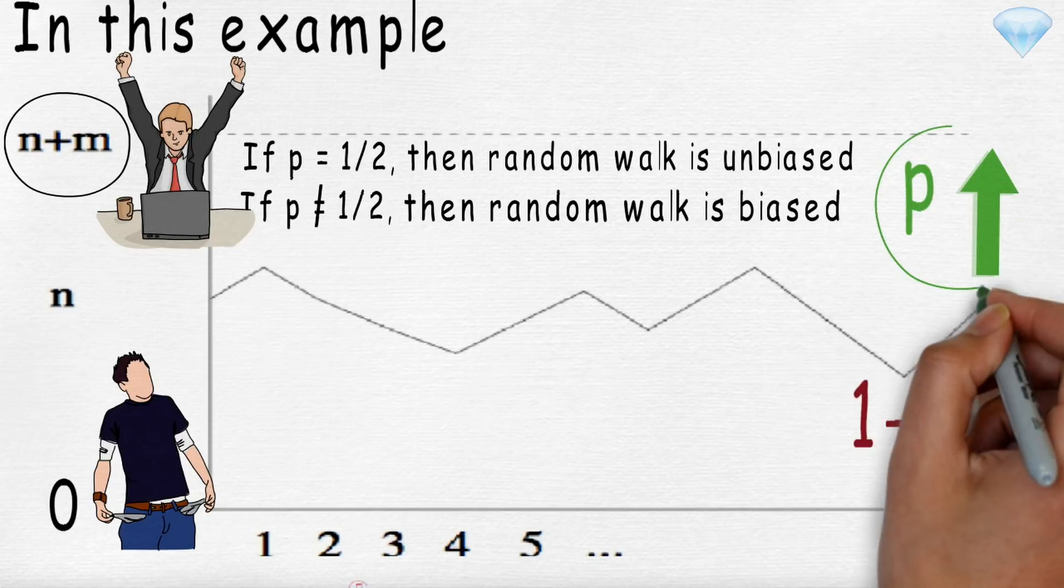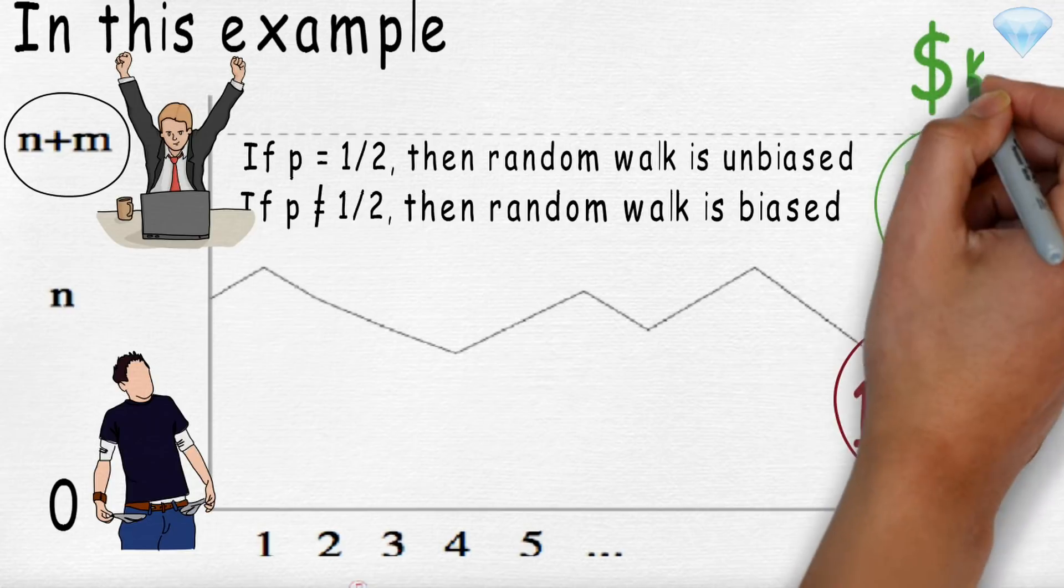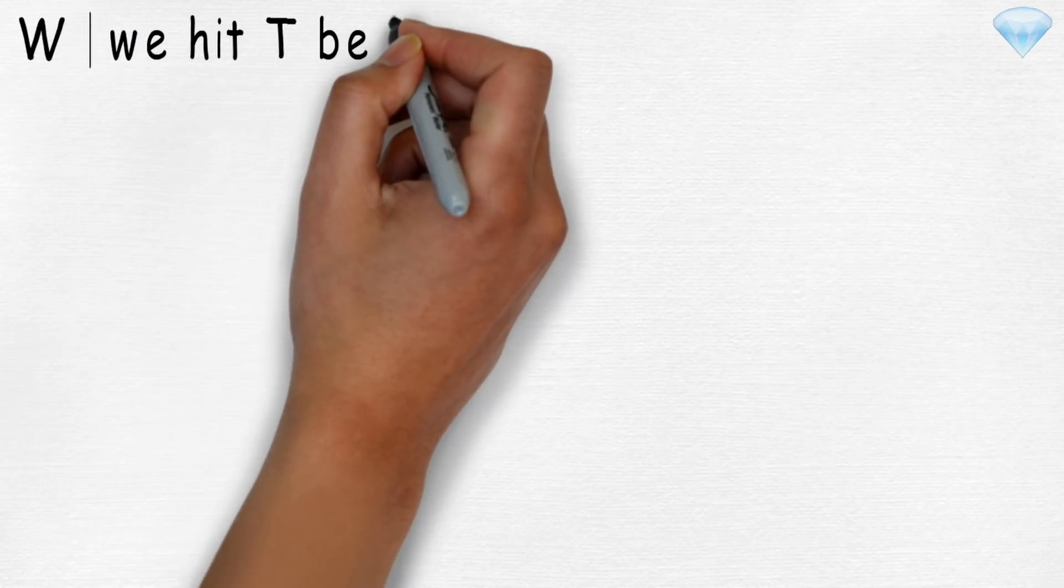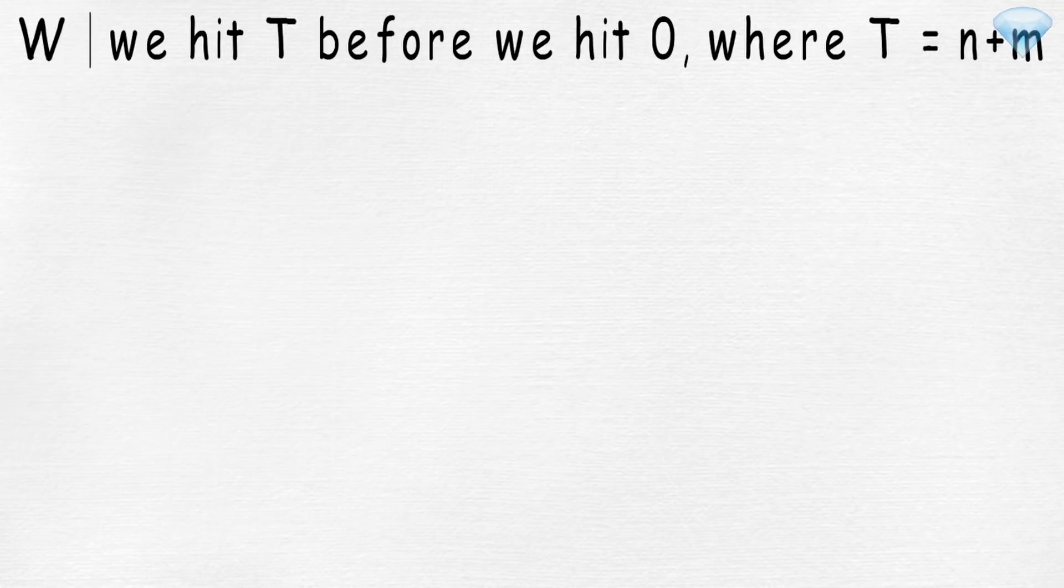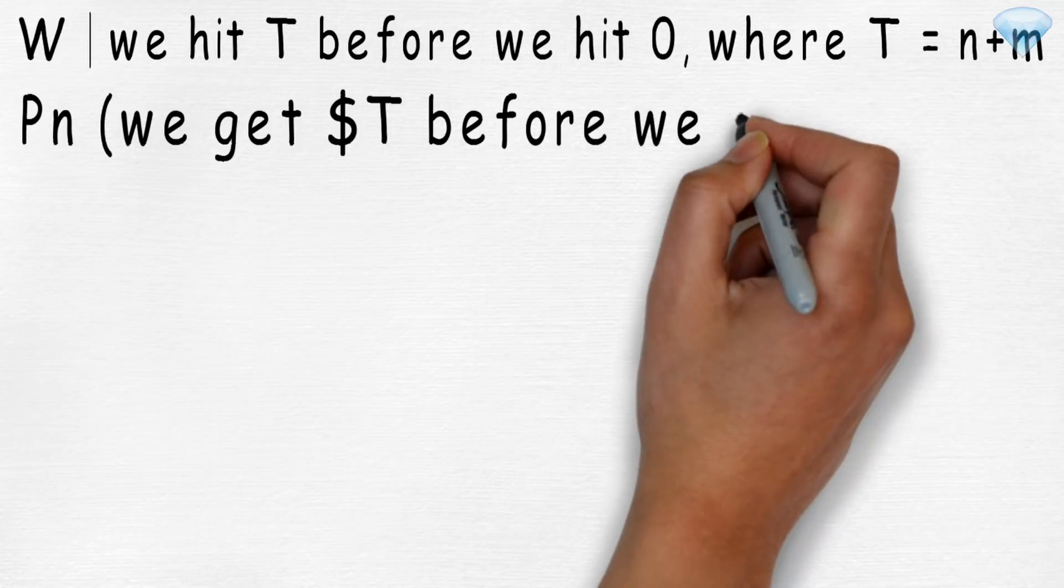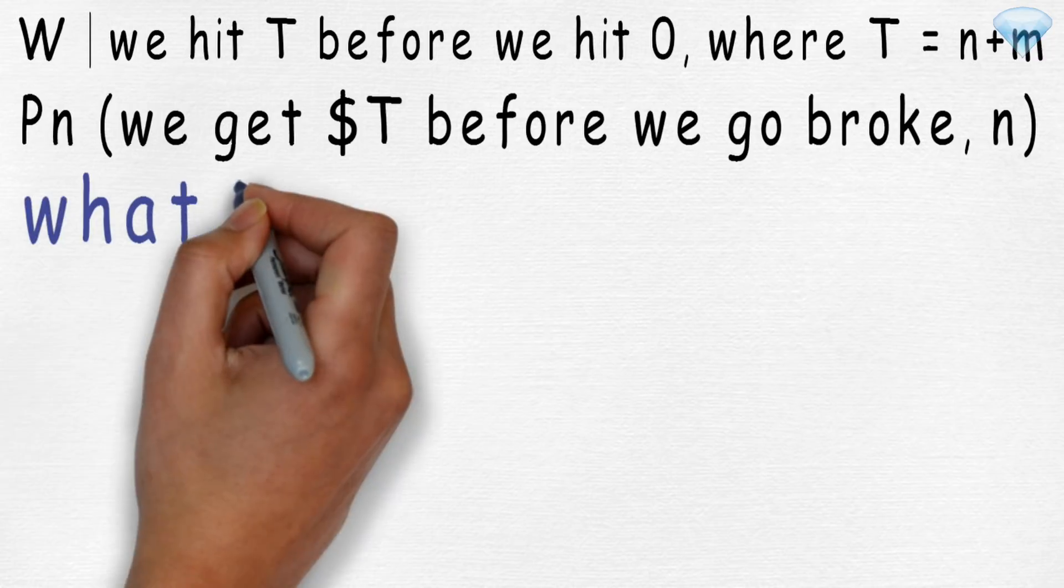So we care about probability of winning or the probability of going broke. Let's figure out the probability that we will gain m amount of dollars before we lose n amount of dollars. To set things up formally, let w be the event we will hit t before we hit zero, where t equals n+m dollars. Let p(n) be the probability we get t dollars before we go broke, given that we start with n dollars. So our question then, what is p(n)?